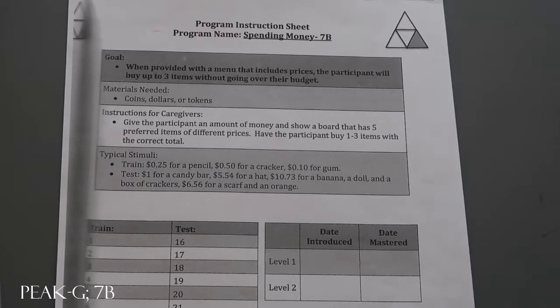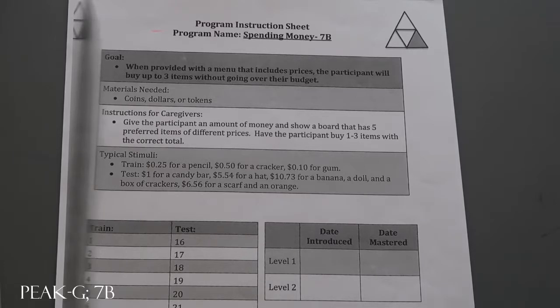This is Peak Generalizations Spending Money 7b. This program is pretty straightforward and you can run it in a couple different ways. I'm just going to show you a few different material samples that we've used for this program.